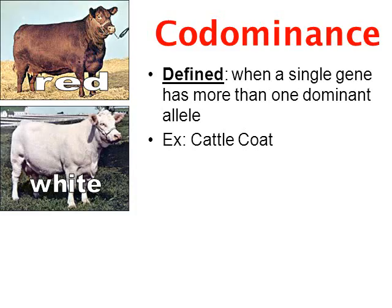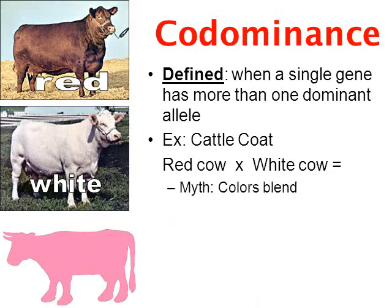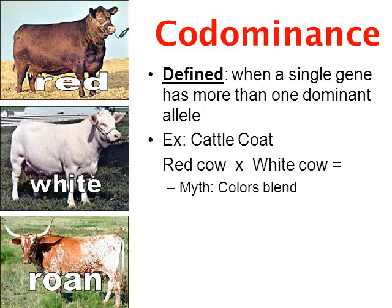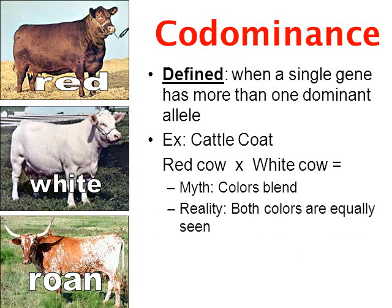In codominance, it's possible to have more than one dominant allele. An example is in the coat or fur of cattle. In the picture, we have an individual with red fur and one with white fur. When the red cow and white cow breed, the babies don't come out pink — that's a myth. What actually happens is both colors are equally expressed: you see patches of red and patches of white. We call this color pattern roan. Red is not dominant to white and white is not dominant to red; they are equally dominant.